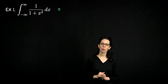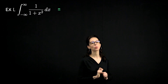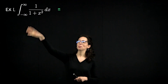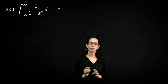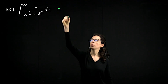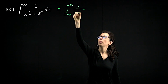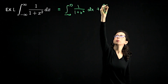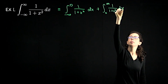For our first example, consider the integral from negative infinity to infinity of 1 over 1 plus x squared. Here both bounds are infinite, so the first thing I'm going to do is chop this computation into two pieces by breaking it up at x equals zero. So we can say that this is the integral from negative infinity to zero of 1 over 1 plus x squared dx, plus the integral from zero to infinity of 1 over 1 plus x squared dx.